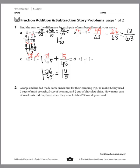Let's look at D: 2 and 1/3 minus 1 and 3/5. We're thinking of multiples of 3 and 5: 3, 6, 9, 12, 15. Since 15 is a multiple of 5, that's our new denominator. So we have 2 and something/15 minus 1 and something/15. We multiply 3 by 5 to get 15, so 1 times 5 is 5. We multiply 5 by 3 to get 15, so 3 times 3 is 9.